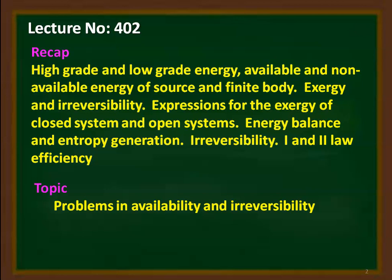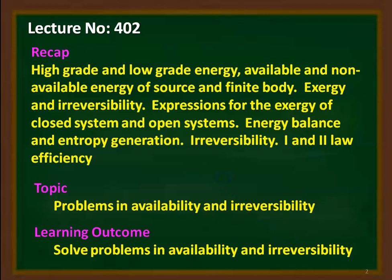Using the expressions derived in the previous lecture, we solve problems in this lecture from the Anna University question paper. The topic of discussion is problems on availability and irreversibility. The learning outcome: at the end of the lecture, the student will be able to solve problems on availability and irreversibility.